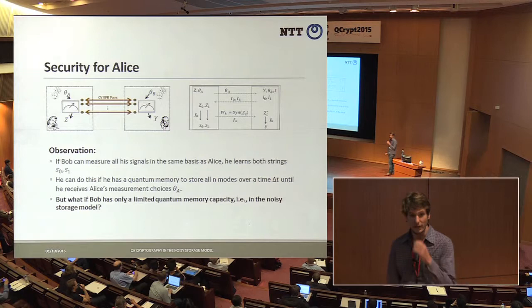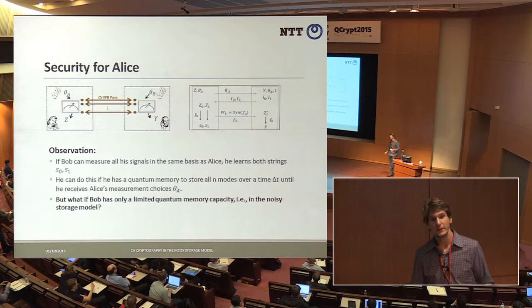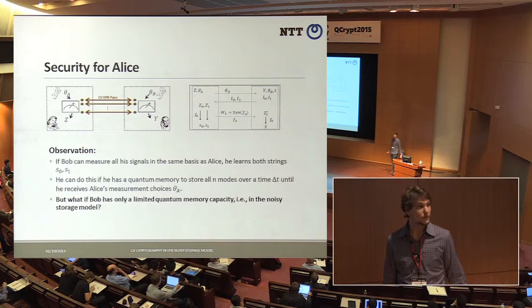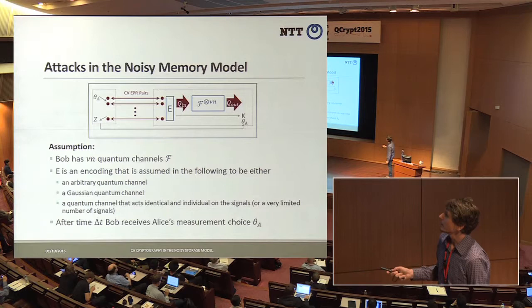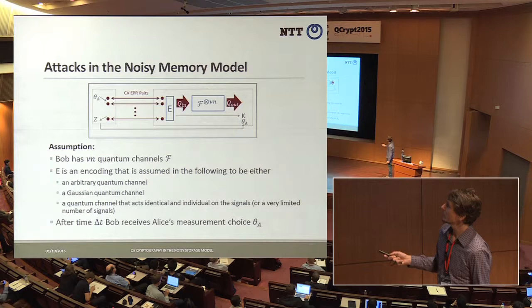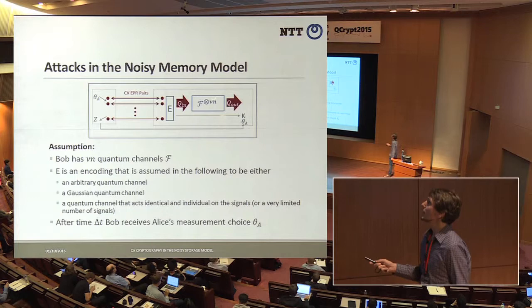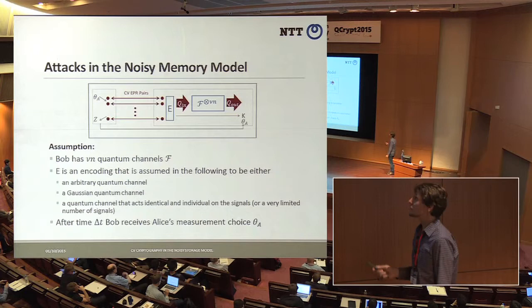Security for Alice is different, because if Bob has a perfect quantum memory, he can just store all the signals until he receives the basis choice from Alice, then measure according to that basis choice and learn both strings. So this doesn't work if Bob has a perfect quantum memory. But what happens if the quantum memory is not perfect? We model the quantum memory as follows: Bob has an encoding operation where he encodes all signals into a quantum memory F, and we assume the fraction of quantum memories relative to n signals is nu.